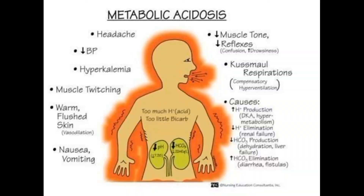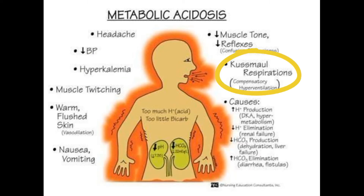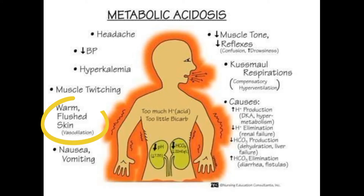For the clinical features, if you watch wrestling you'll know Triple H. In metabolic conditions you'll generally have nausea and vomiting, and in this case reduced blood pressure. The Triple H here stands for: headache, hyperkalemia, and compensatory hyperventilation which leads to Kussmaul breathing or Kussmaul respirations. You'll also notice warm flushed skin due to vasodilation and reduced reflexes and muscle tone.